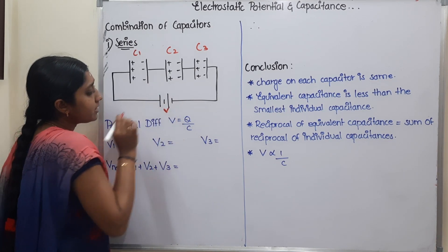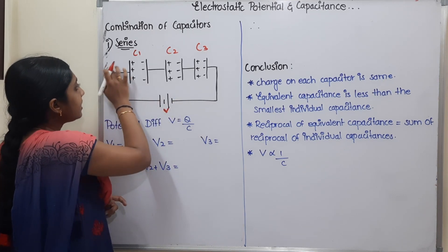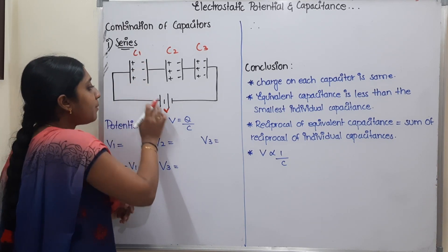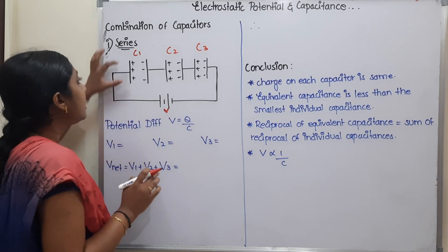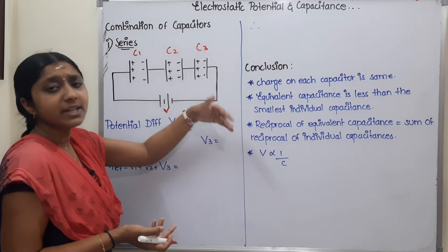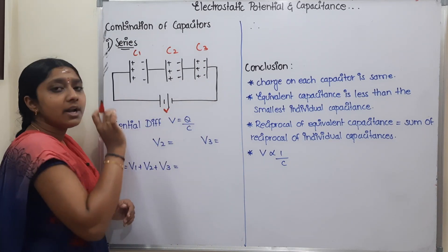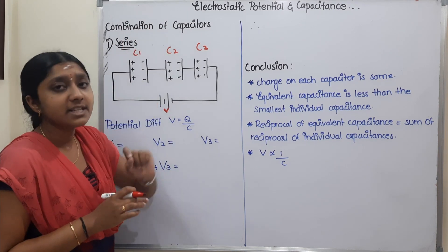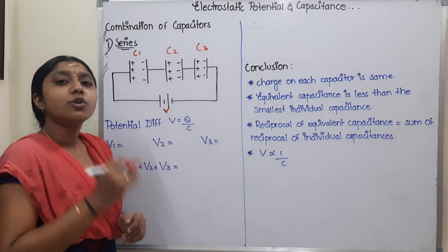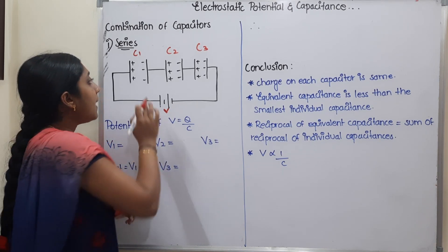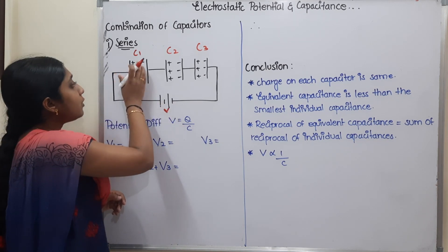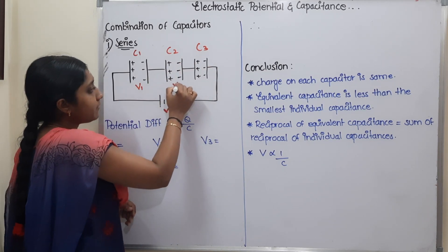This voltage is V. When current passes, in the first capacitor there will be a plus Q charge — positive plate has plus Q and the other side has minus Q. The charge pattern alternates: plus, minus, plus, minus across the series capacitors. The potential difference is different across each capacitor — V1, V2, and V3. Capacitors are C1, C2, C3 with potentials V1, V2, V3.